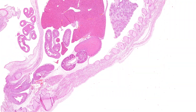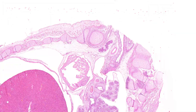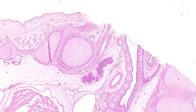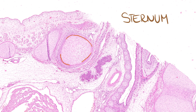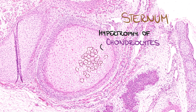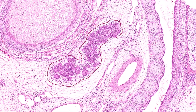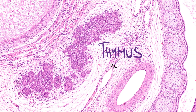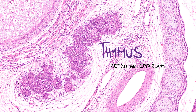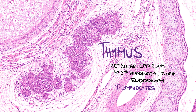The uppermost and largest cartilaginous structure in the anterior thoracic wall is the sternum. The hypertrophy of its chondrocytes is the sign of the ongoing endochondral ossification. There is also a thymus located dorsally to the sternum. The reticular epithelium of the thymus arises from the third pharyngeal pouch endoderm, and T lymphocytes, which acquire immunocompetence in the thymus, enter it from the blood islets where they arise.